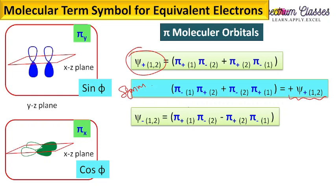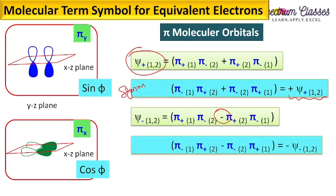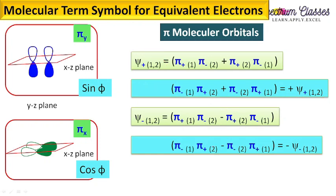For ψ−(1,2), we write it with a minus sign between the two terms. On reflection, π+ converts to π- and π- converts to π+, but we must take the minus sign to recover the original wave function. We ultimately get −ψ−(1,2), meaning ψ− is asymmetric on reflection.